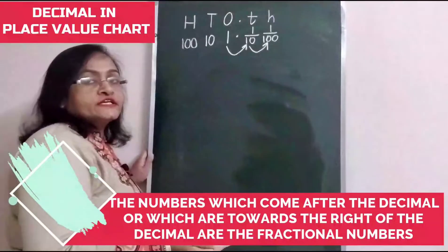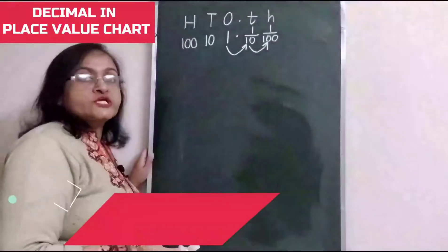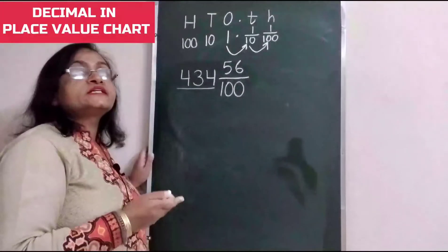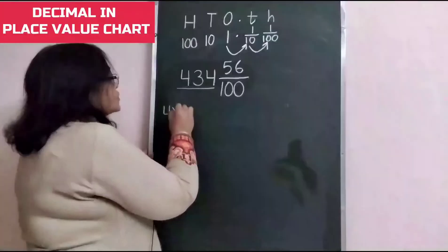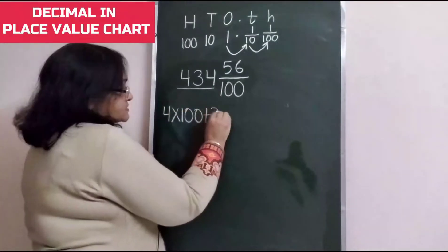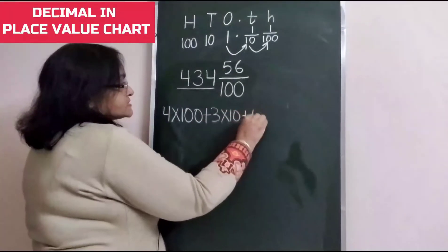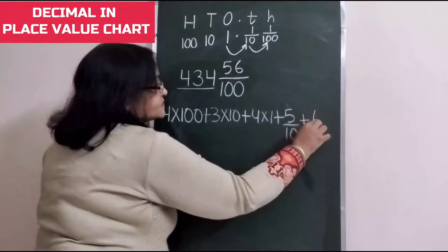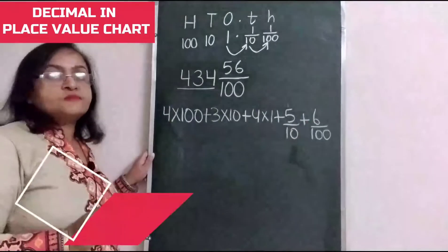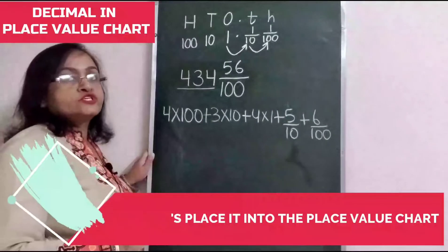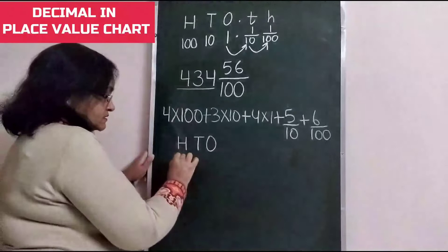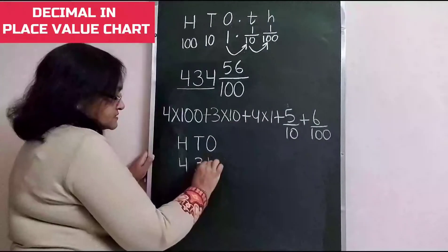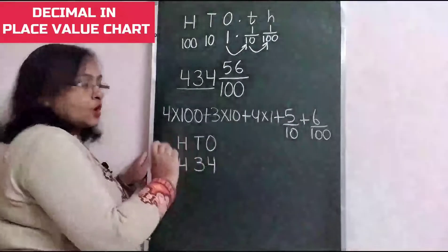The numbers which are to the right of the decimal point are the fractional numbers. For example, if we write it in expanded form, it will be written as 4 multiplied by 100, plus 3 multiplied by 10, plus 4 multiplied by 1, plus 5 upon 10, plus 6 upon 100. Now let's place it into the place value chart. 4 hundreds, so we place 4 here. 3 tens, so we place 3 here. 4 ones, so we place 4 under ones.